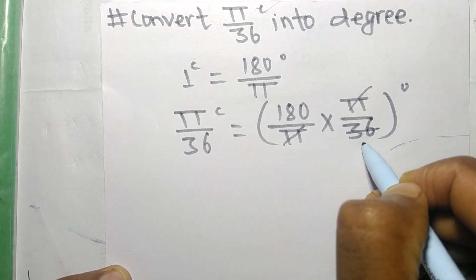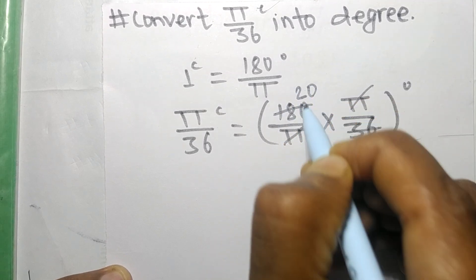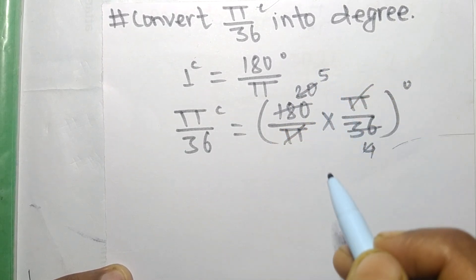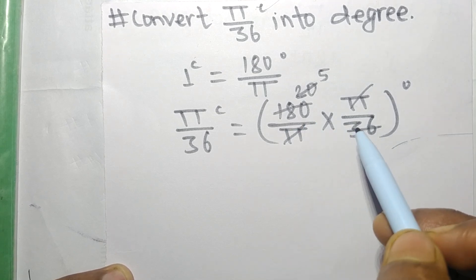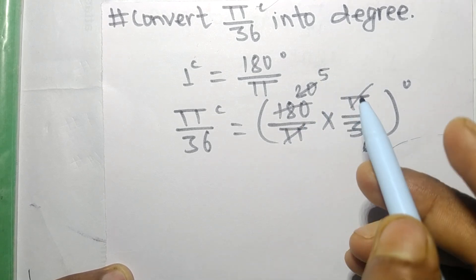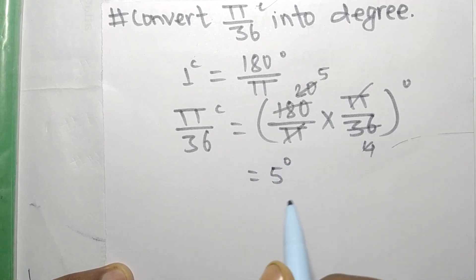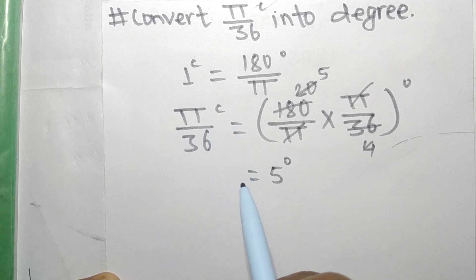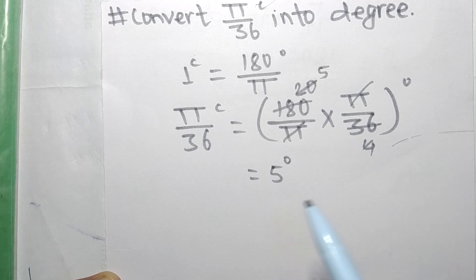9 times 4 is 36, and 9 times 20 is 180, so 4 times 5 is 20. By dividing 180 by 36 we get 5, so it equals 5 degrees. Therefore, π/36 radian is equal to 5 degrees. Thanks for watching.